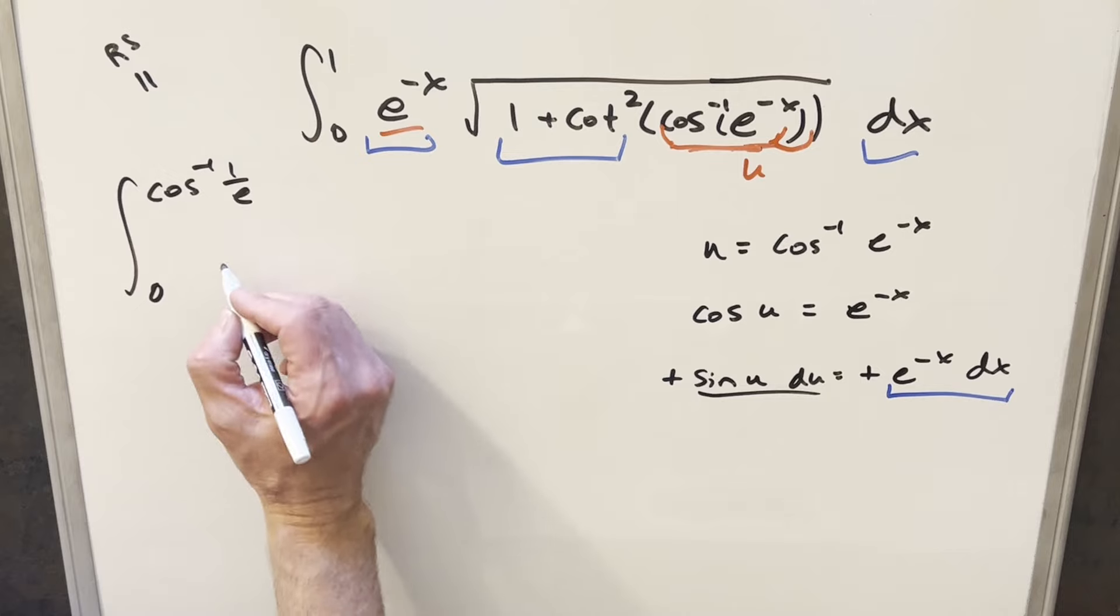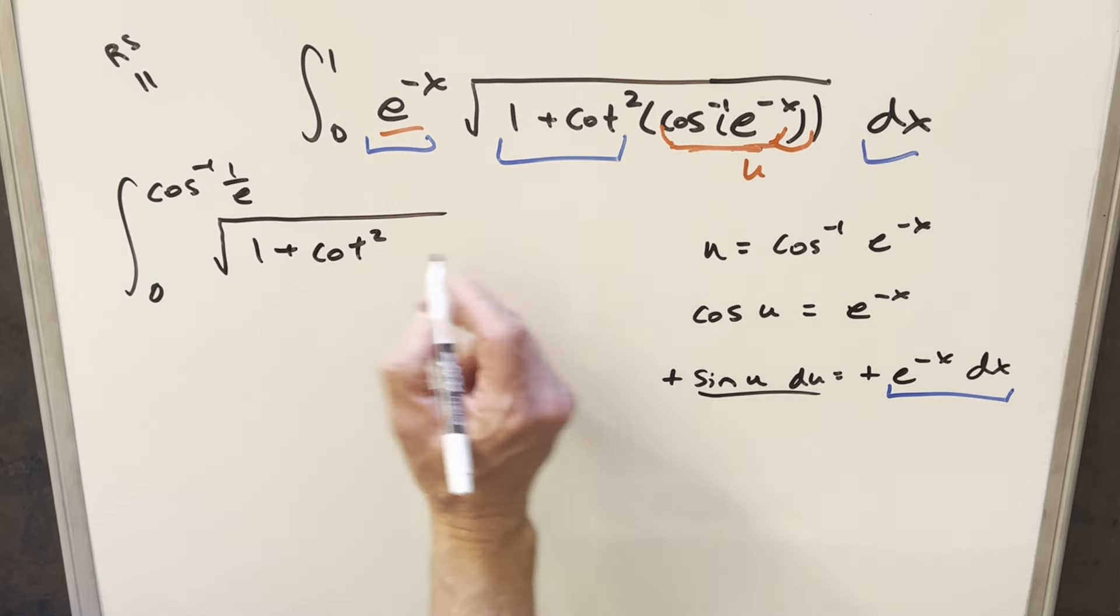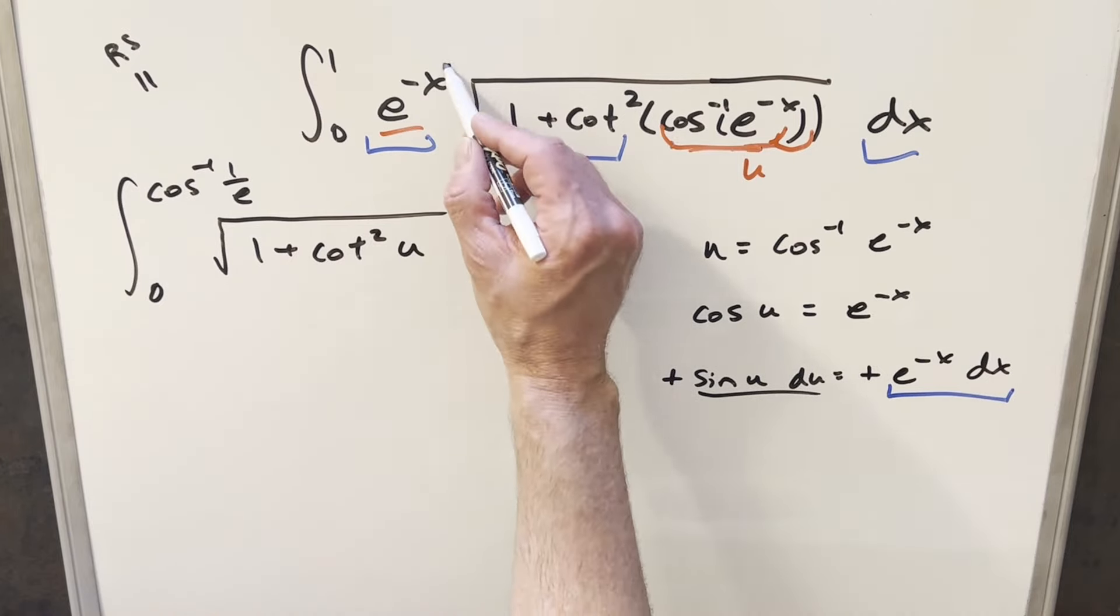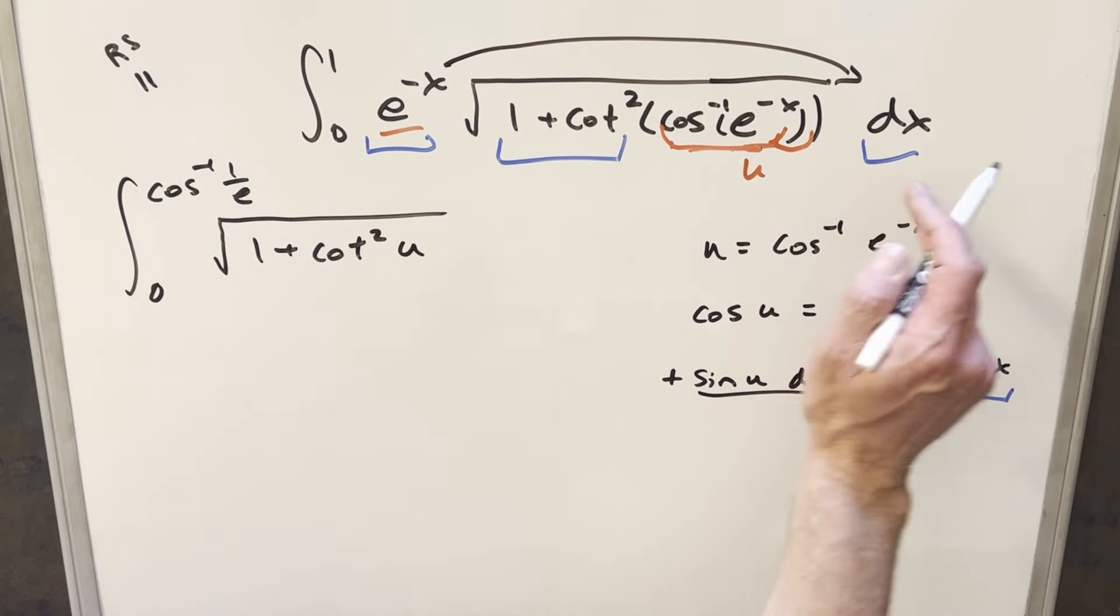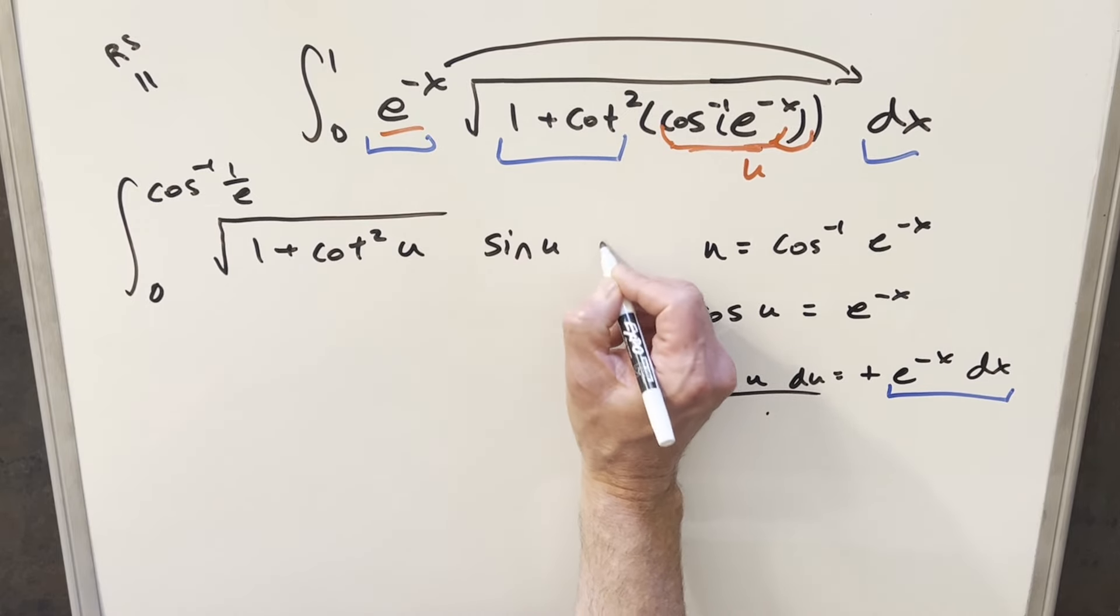Next, let's just focus on this radical part. This is going to become square root one plus cotangent squared, and this is going to be just u. And then remember, I'm bringing this e minus x to be with this dx. So e minus x dx, that's going to be equal to sine u du.